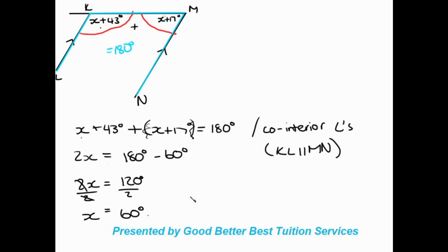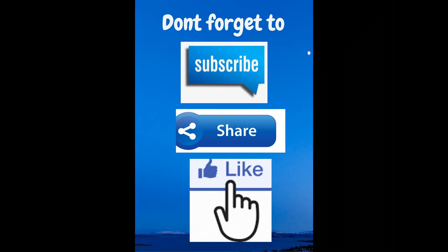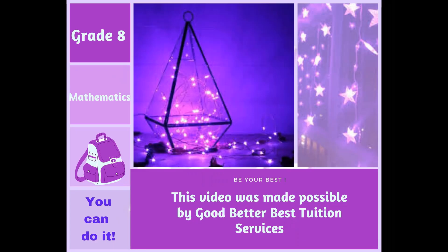A very important thing to note about today's lesson: don't stress out if you see two angles with variables in them. All you need to do is follow your rules and you'll get to a situation where you can solve for x. It might take a bit longer than usual, but you will get to your answer. Just remember to apply the rule and write it as you say it. Thank you very much for joining us — that is the end of the recording for today.